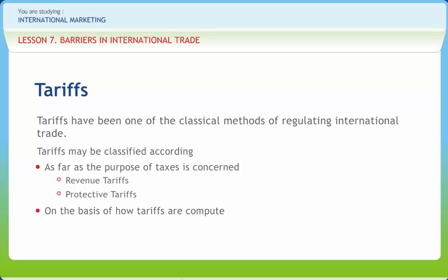On the basis of how tariffs are computed, tariffs may be put into two categories. First is Specific Tariffs and second is Ad Valorem Tariffs. Specific tariffs are imposed on the basis of per unit of any identifiable characteristics of merchandise, such as per unit of weight, volume, length, number, or any other unit of quality of goods. Ad valorem tariffs are based on the value of imports and are charged in the form of a specific percentage of the value of goods.